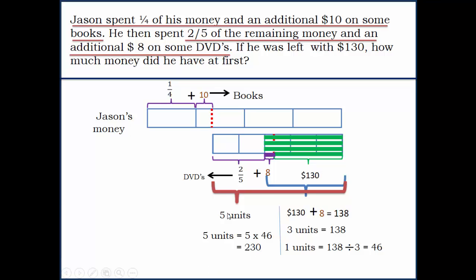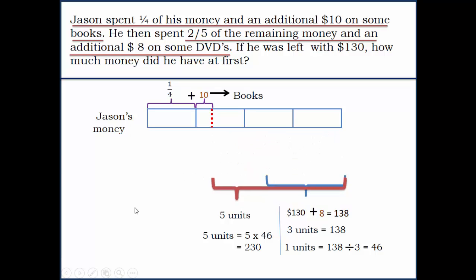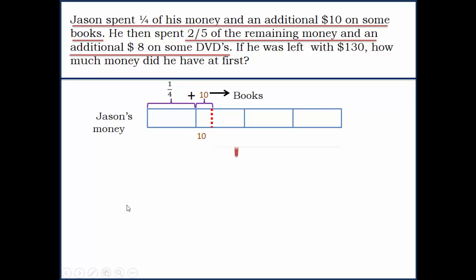We're going to use the same concept again because we know that this whole amount is $230. This additional amount here is $10, so the total of that plus this $10—230 plus 10—gives us $240.